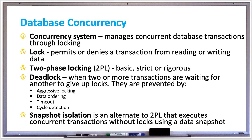A deadlock is a situation in which two or more transactions are waiting for another to give up locks. A dependent transaction is waiting for data locked by another transaction, and a cycle of dependent transactions indicates that deadlock has occurred.